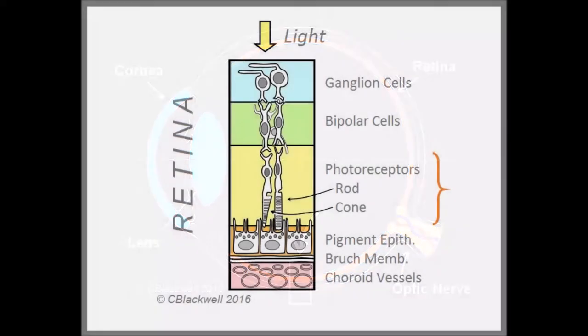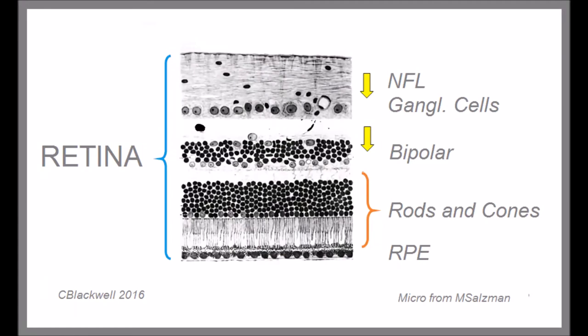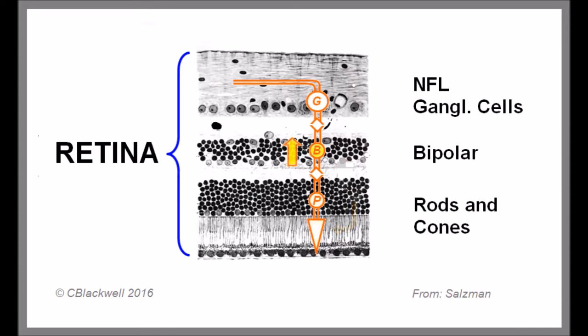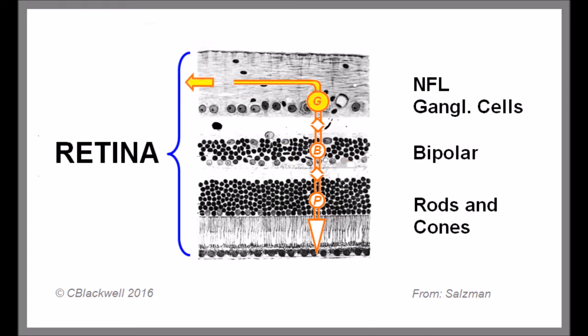Here in the retina, somewhat surprisingly, the photoreceptors are the outer layer, meaning light has to travel through the inner layers made of other nerve cells to reach the outer light-sensing cells. The chain of information goes like this: when a photoreceptor senses light, it engages bipolar and other intermediate cells, which in turn stimulate a ganglion cell, which then carries information along an axon on the inner surface of the retina, to the optic nerve head, and back to the brain.